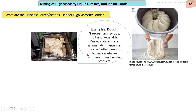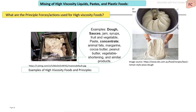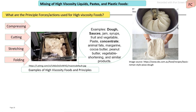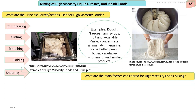Proper mixing of these materials must be achieved by a combination of more than two principal forces. The main forces involved are compression, cutting, stretching, folding, and shearing. These forces are required to achieve proper mixing of high viscosity liquid food products. The key considerations for mixing high viscosity liquid food materials should be noted.